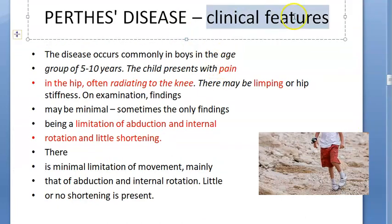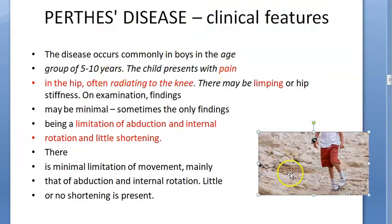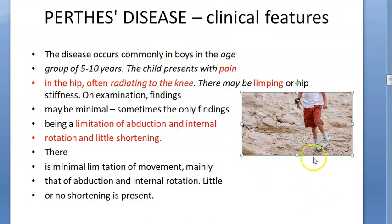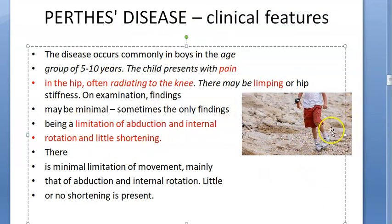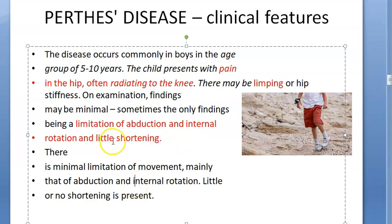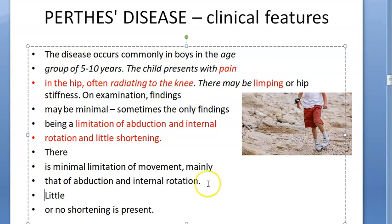The clinical features: a 5 to 10 year old boy will come with pain in the hip, which radiates to the knee. He may be limping — a painful limp. There is limitation of abduction and internal rotation, and there may be a little shortening of the limb.